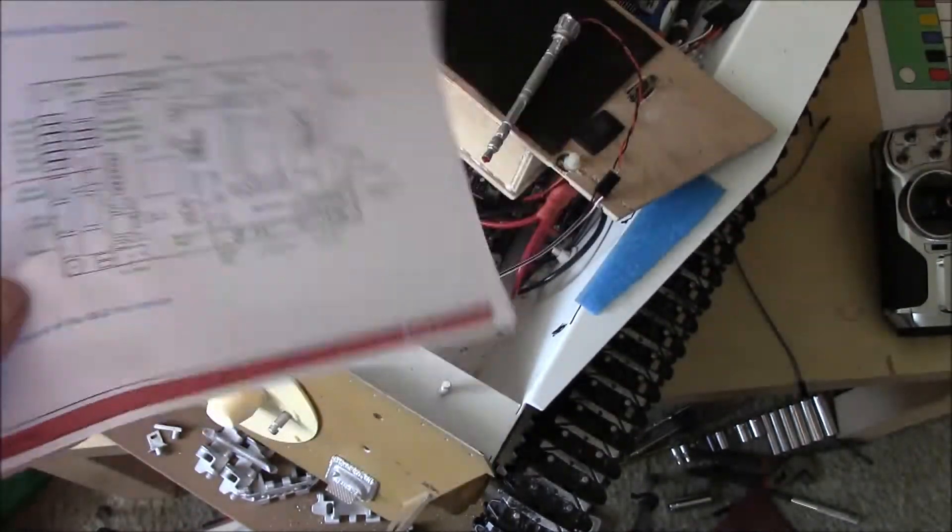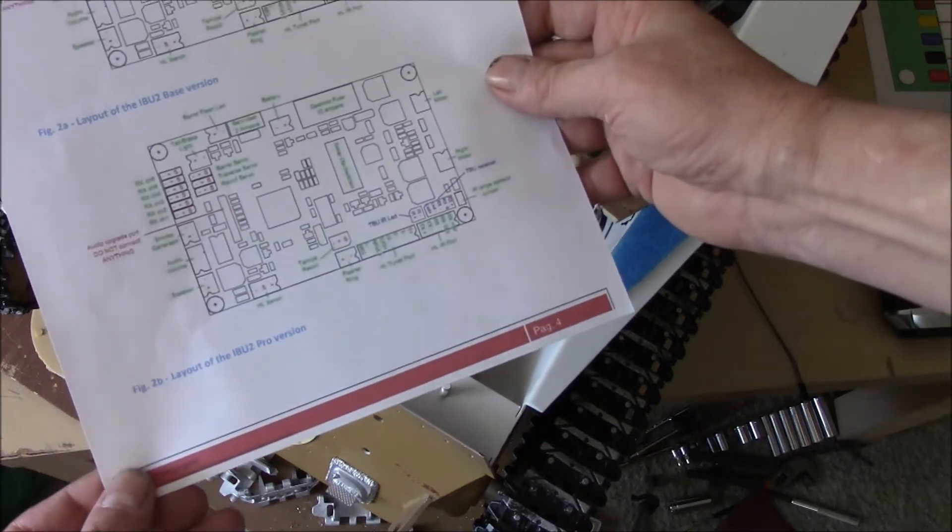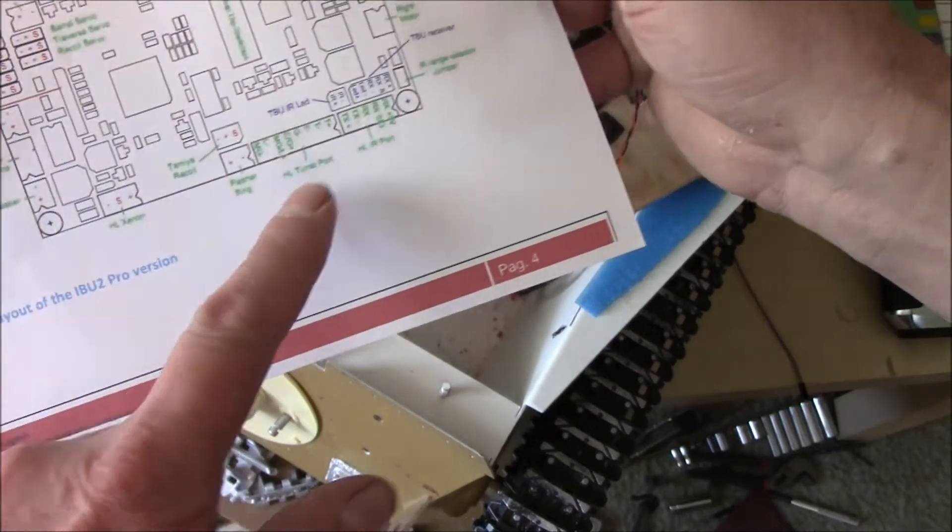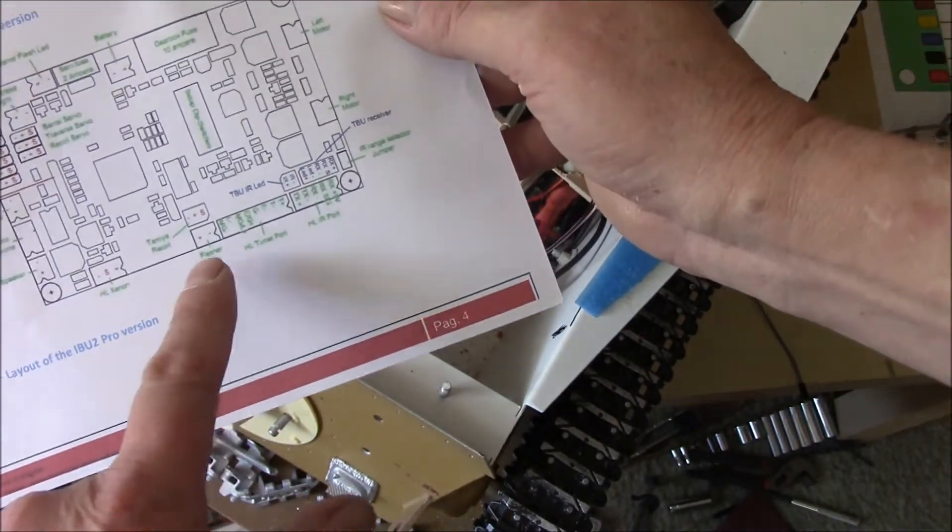One of the things I really like about the IBU is that they give you really clear schematics. They tell you exactly what everything is. So when I go to the 8 pin, I know which pin is machine gun positive and machine gun negative.